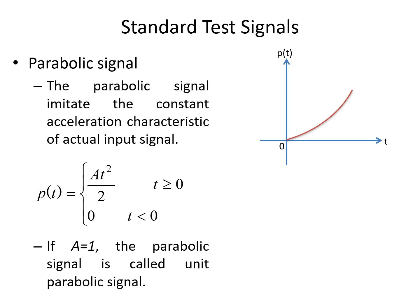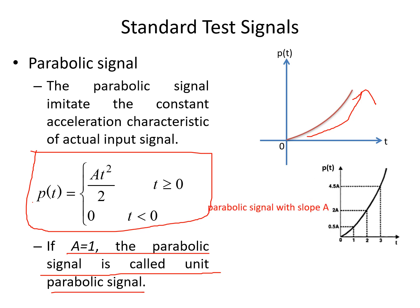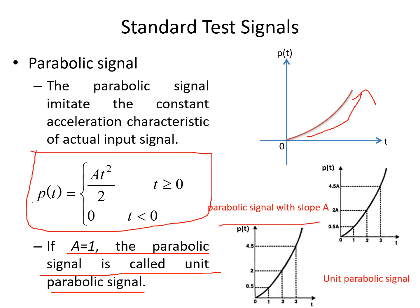The next standard signal is the parabolic signal, also called the constant acceleration signal. It is represented as P(t) equal to At²/2 for t greater than or equal to 0, and it is 0 for t less than 0. If A is equal to 1, the parabolic signal is usually called the unit parabolic signal. It has a parabolic shape, and this is the fourth standard signal used for analysis of the system. The unit parabolic signal takes values 0.5, 2, 4.5, and so on.